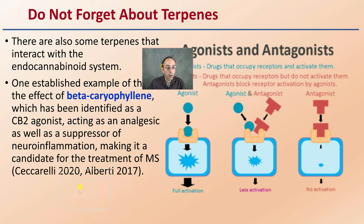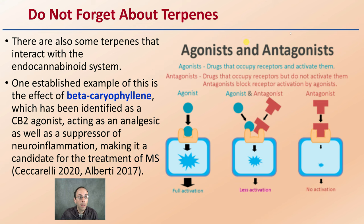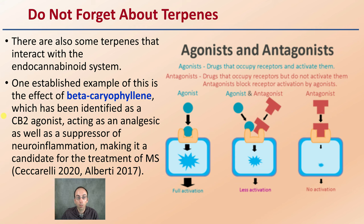Don't forget about the terpenes. There are also some terpenes that interact with the endocannabinoid system as well. One established example is beta-caryophyllene, which has been identified as a CB2 agonist, acting to suppress neuroinflammation, making it a candidate for the treatment of multiple sclerosis.